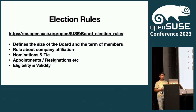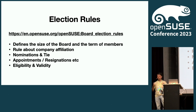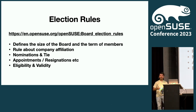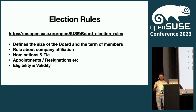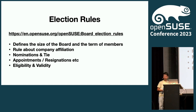Elections follow a broad set of rules covering how to conduct the election, how to call for nominations and select candidates, and what rules decide whether somebody has been elected or if there's a tie. The wiki page is quite lengthy and defines the size of the board and term of members, rules about company affiliation — for example, there cannot be a certain number of people from the same company on the board to avoid imbalance — decisions about nominations and ties, appointments, and what happens if a board member resigns.